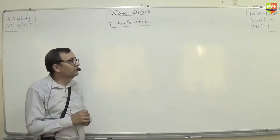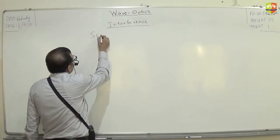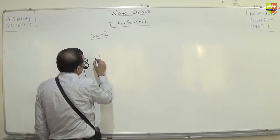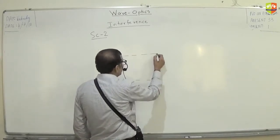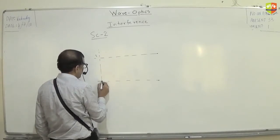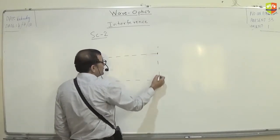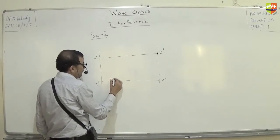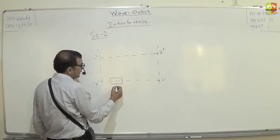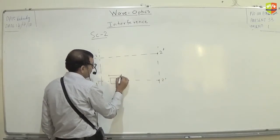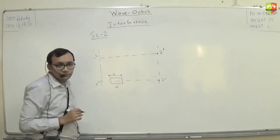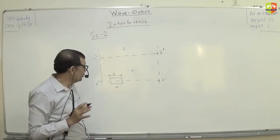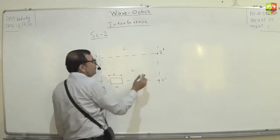We'll learn all that a bit later. Now let's talk about scenario 2. In scenario 2, you have two waves travelling the same distance, but the lower wave travels a small distance t in a medium of refractive index μ. Total distance is L and L. You have to find the phase difference between point 2 and point 2-dash.